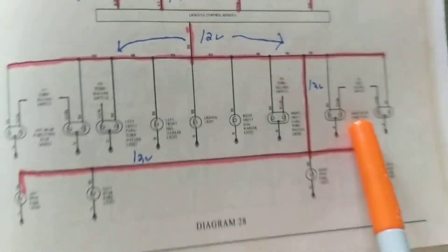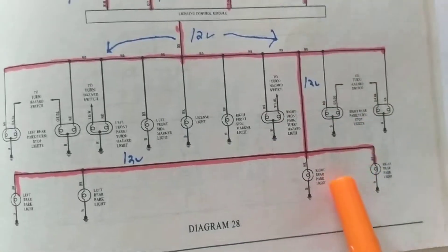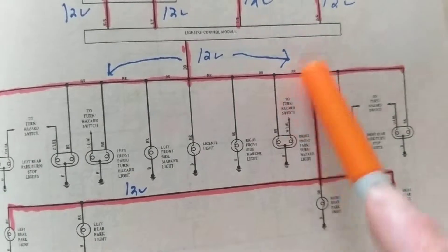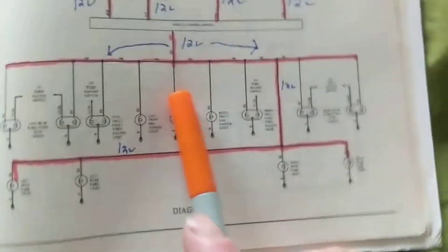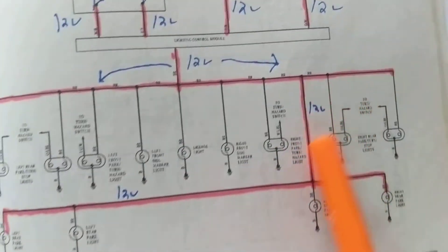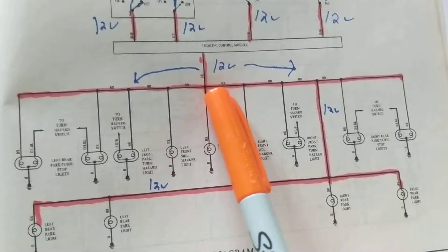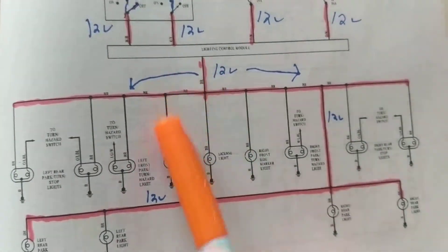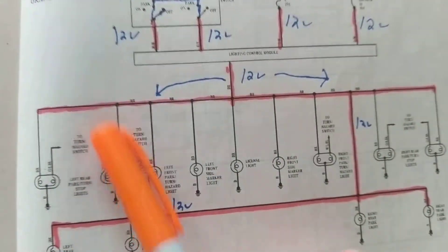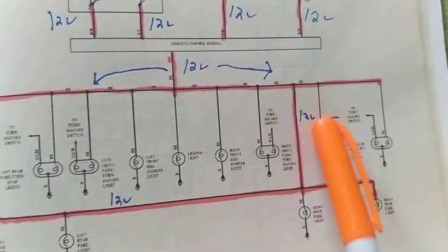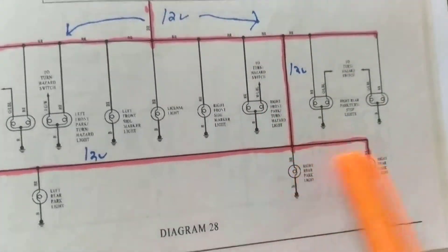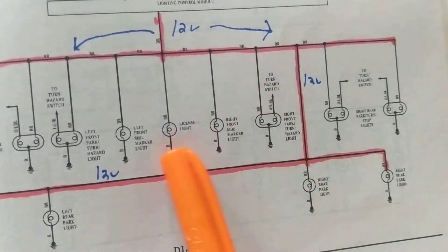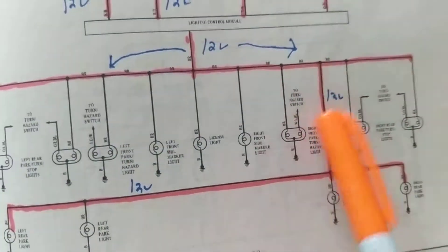One thing to understand about the lighting systems — the bulbs and everything — they are in something called parallel circuits. Parallel means you have different branches with equal voltages. In other words, if 12 volts would be here across any branch, you would have 12 volts at every single bulb, whether it's the brake lights, whether it's the parking lamps, whether it's the license plate — 12 volts across each one.